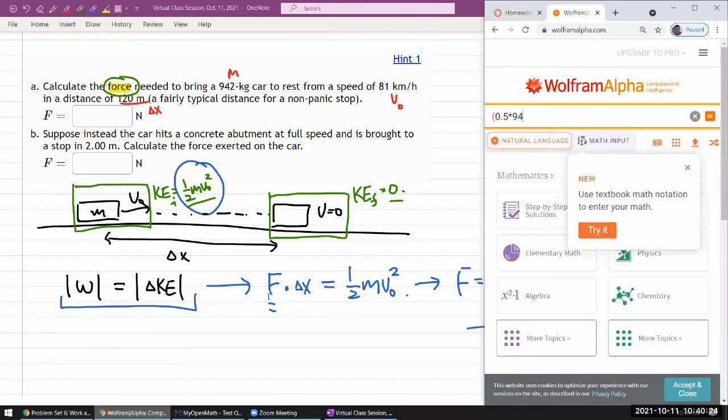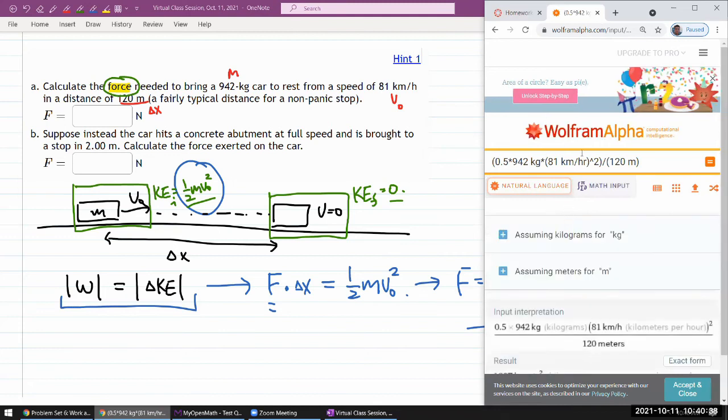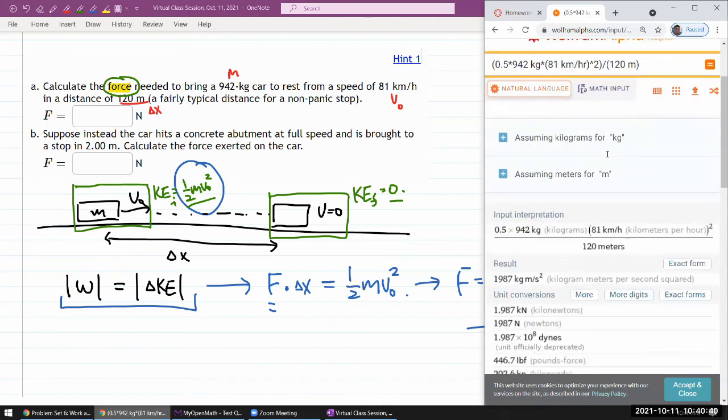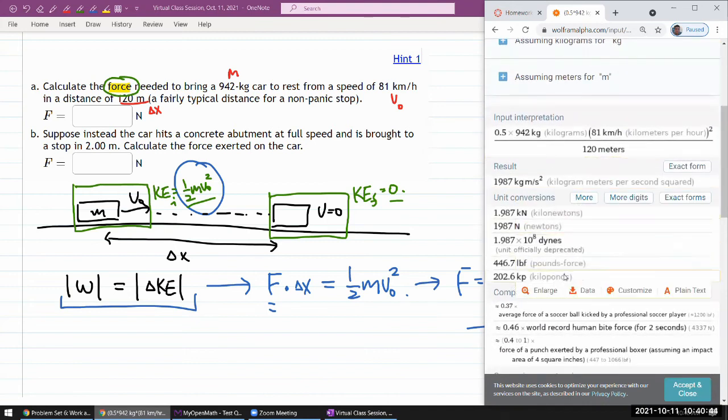Okay, so 0.5 times mass, 942 kilogram times the 81 kilometer per hour squared divided by 120 meters. This way I don't have to convert 81 kilometer per hour to meters per second. So I have 1987 newtons.